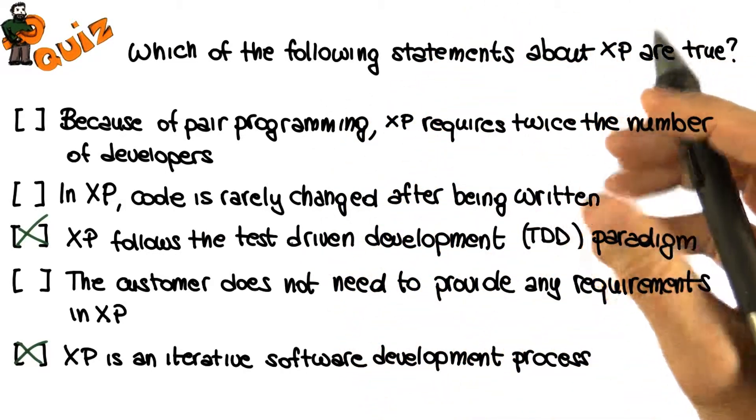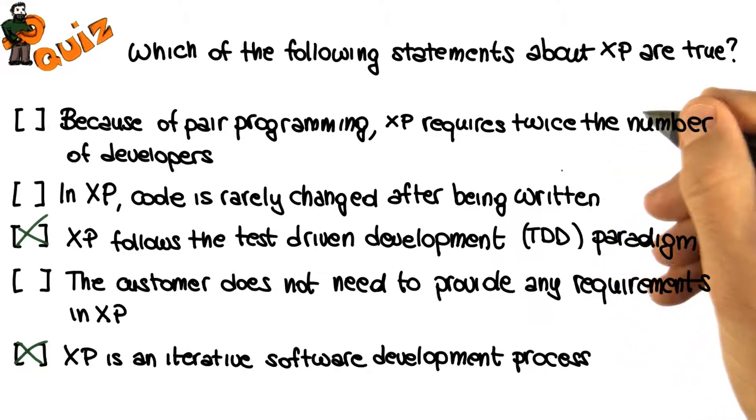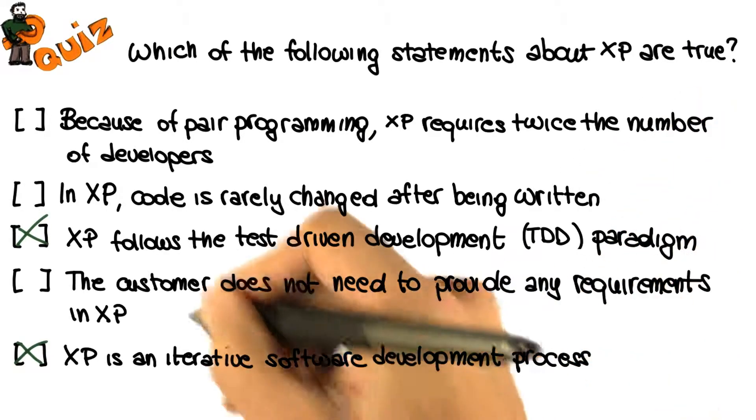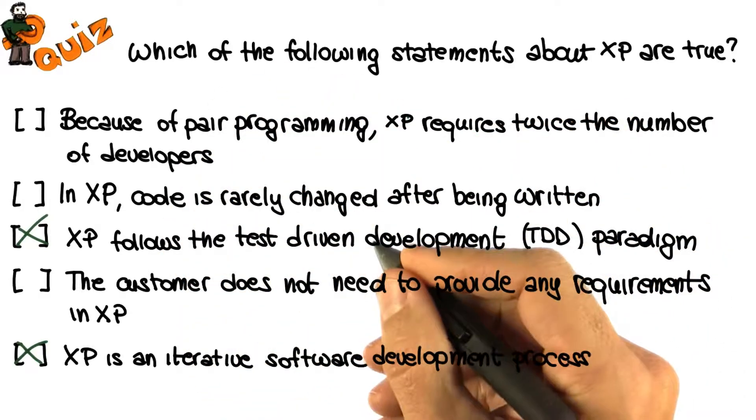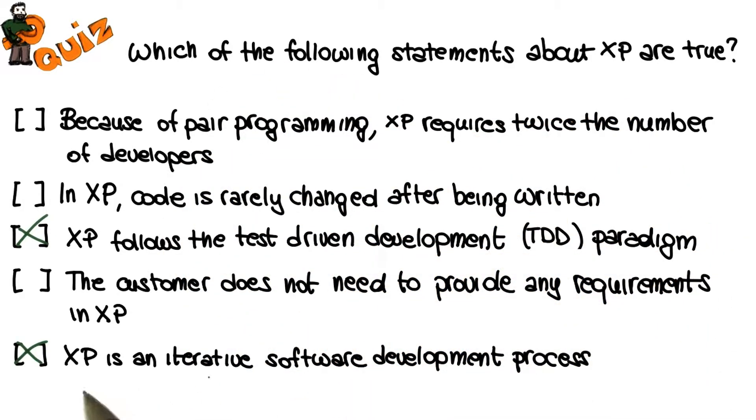Based on that, we develop task cards, and then we use the task cards to write test cases, and then to write code. And we continue this cycle in an iterative way until we are done with all the story cards and all the user stories. So definitely XP is an iterative software development process.